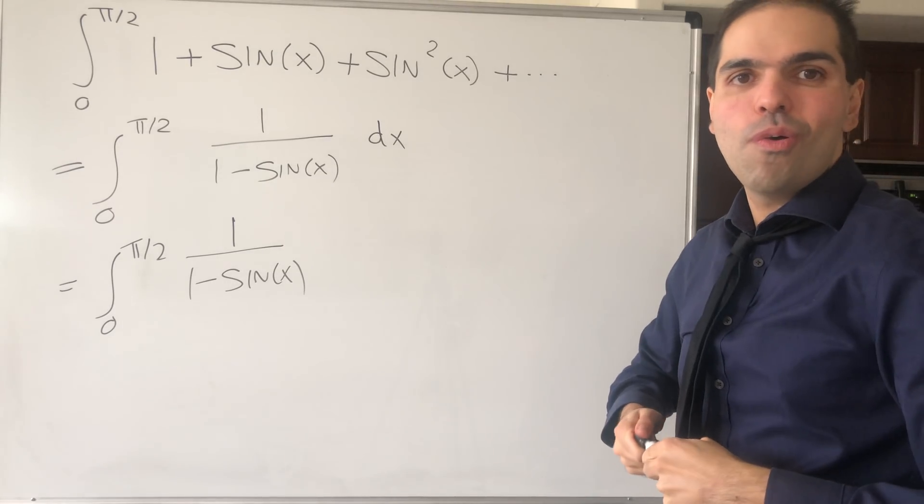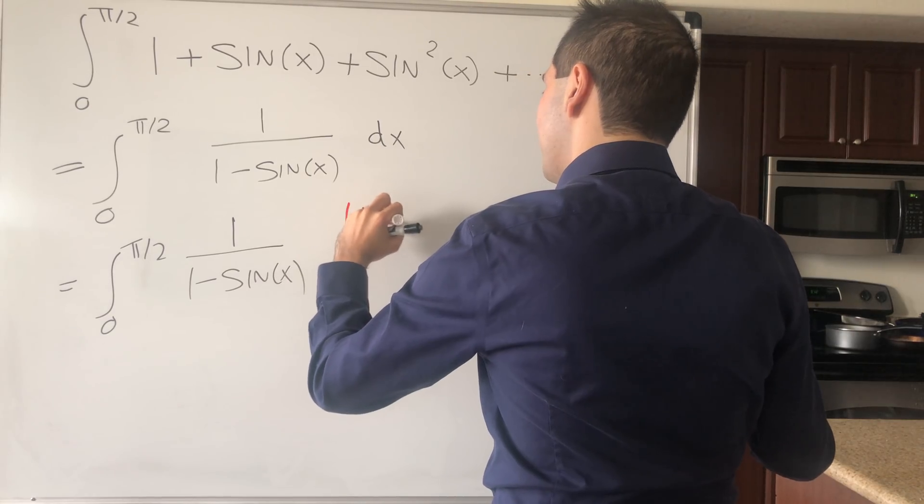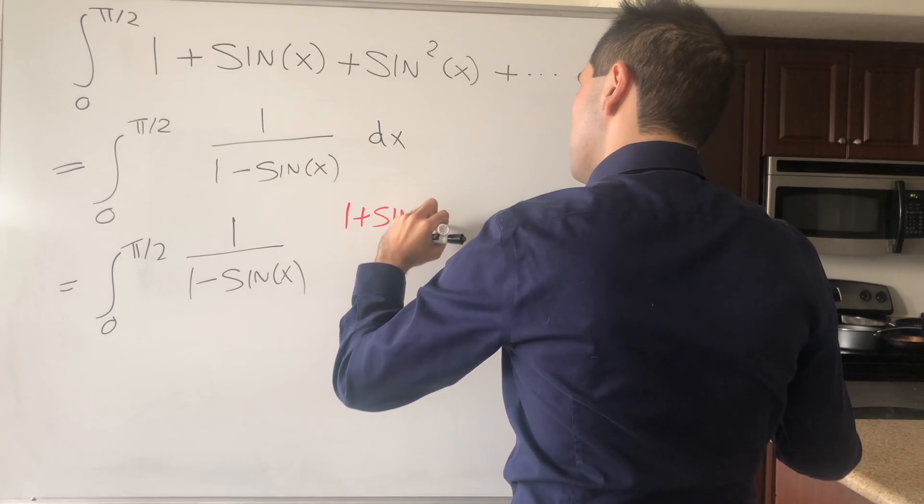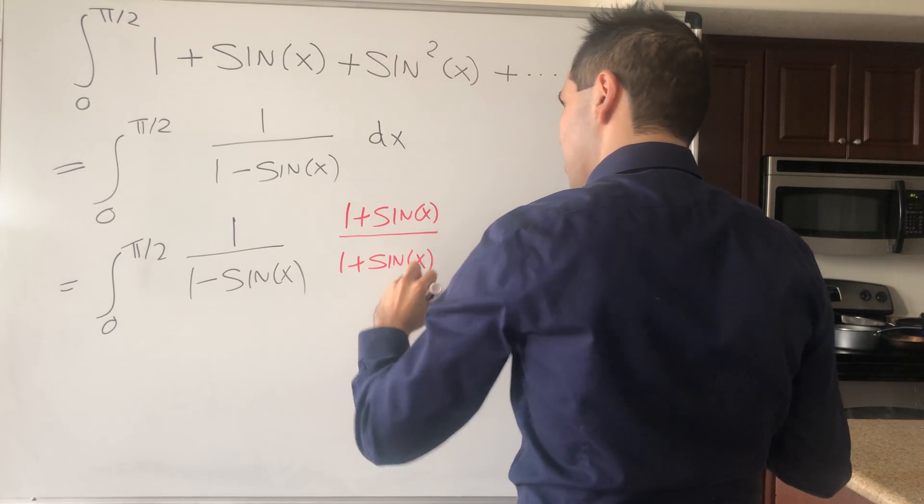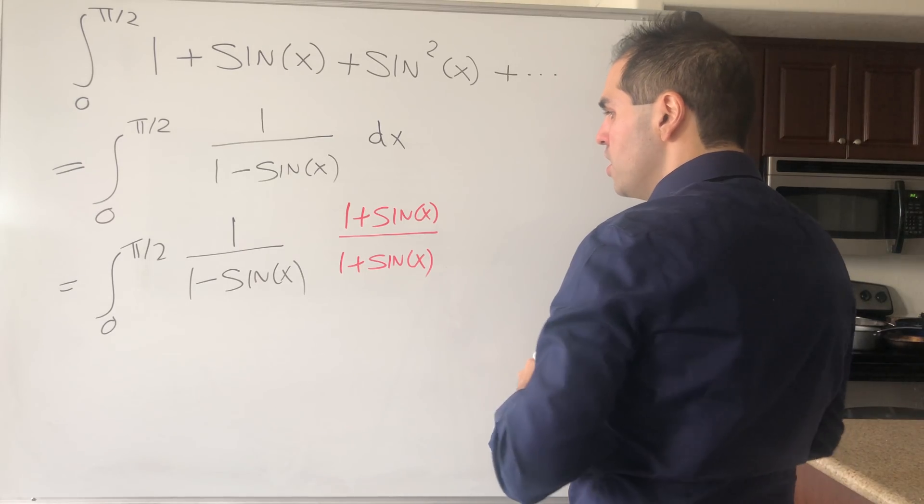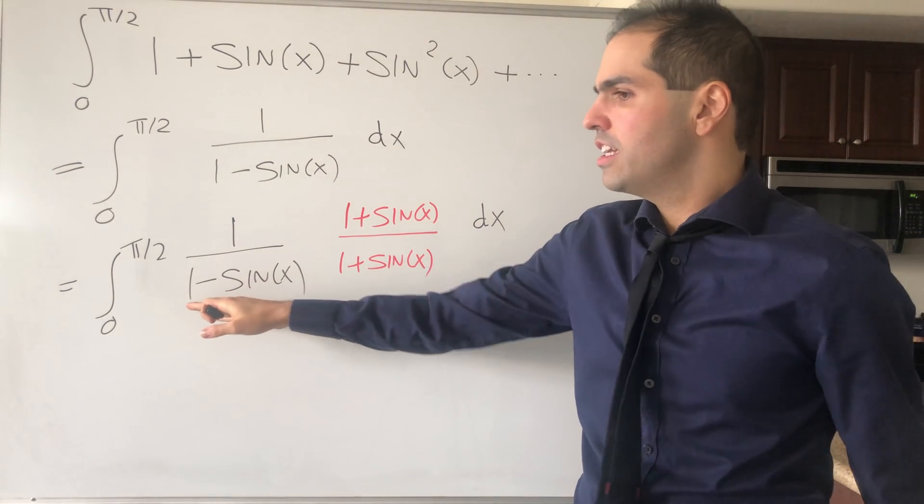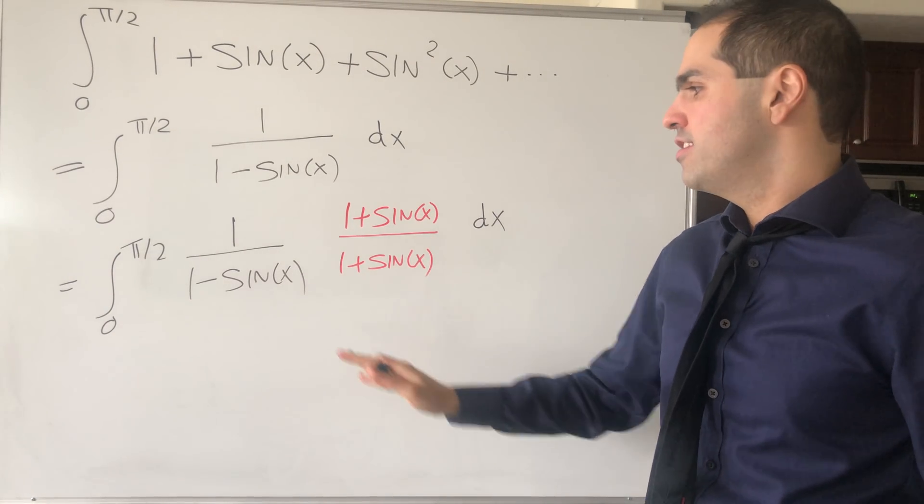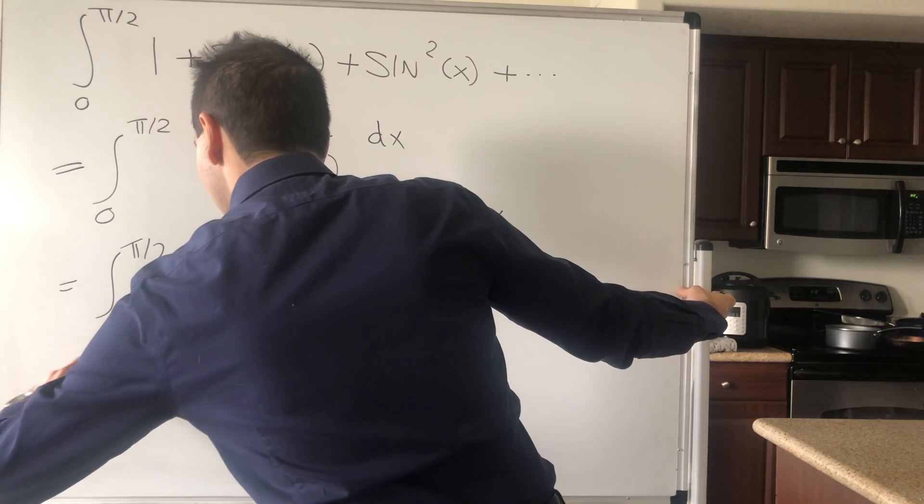What you have to do is take 1 - sin(x) and multiply it by a conjugate form, just like you would do with square roots. So this becomes (1 + sin(x))/(1 + sin(x)) dx. Why is this good? Because the denominator is (a - b)(a + b), which is just a² - b².